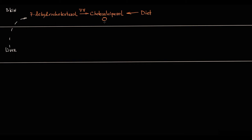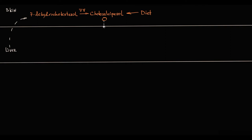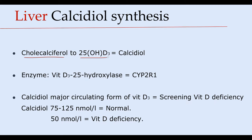Cholecalciferol itself is not biologically active, and to be activated it requires two additional hydroxy groups. These modifications are provided by enzymes in the liver and kidney. Since cholecalciferol is synthesized from cholesterol, which is a lipophilic substance, it cannot be transported through the bloodstream alone — it requires a protein transporter. So cholecalciferol binds to vitamin D binding protein, which transports it from the skin to the liver. In the liver, cholecalciferol undergoes hydroxylation to 25-hydroxyvitamin D3, also known as calcidiol. This reaction is catalyzed by the enzyme vitamin D3-25-hydroxylase.